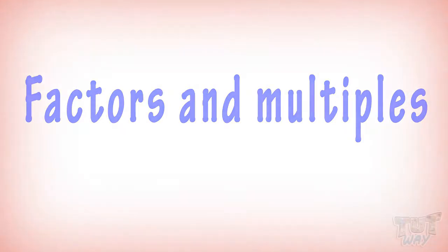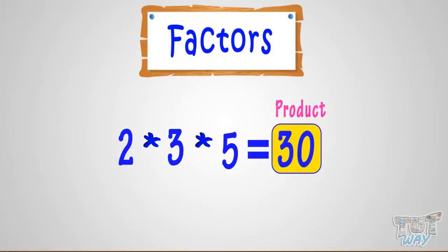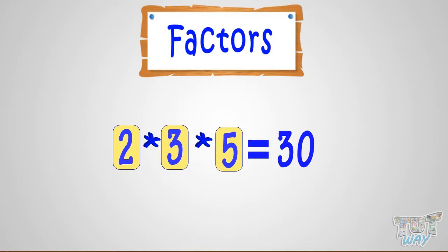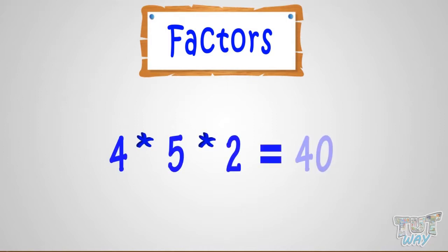Factors: When we multiply two or more numbers, we get a product. Each number is called a factor of the product. For example, 4 multiplied by 5 multiplied by 2 equals 40. So here, 4, 5, and 2 are factors of 40.